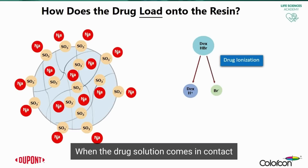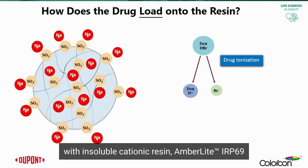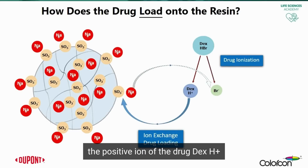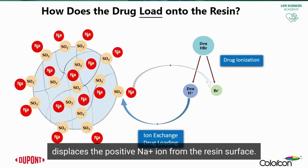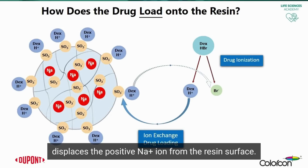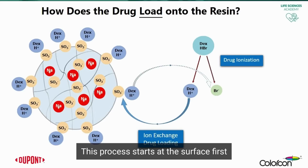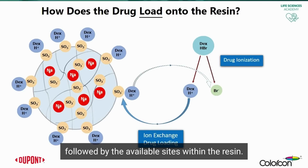When the drug solution comes in contact with the insoluble cationic resin Amberlite IRP69, the positive ion of the drug, DexH+, displaces the positive sodium Na+ ion from the resin surface. This process starts at the surface first, followed by the available sites within the resin.